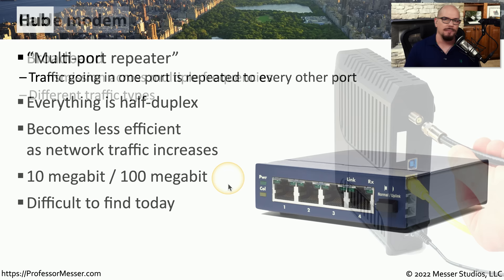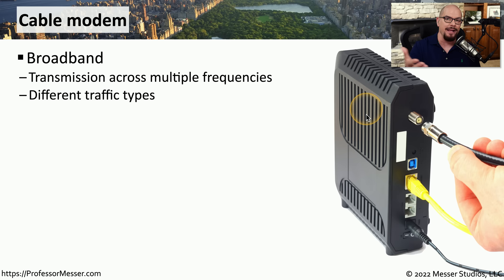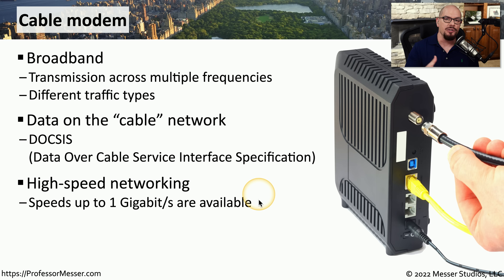If you're using the same cable for cable television and internet, you probably have a cable modem in your home. This allows you to communicate over broadband communication, where multiple frequencies of traffic are used over a single wire — carrying video signals for television, phone lines, and internet data. There's a standard for sending data over these cable networks called DOCSIS, which stands for Data Over Cable Service Interface Specification. Many cable modems can support speeds up to 1 gigabit per second, with total speeds dependent on your service provider.